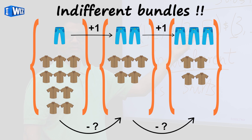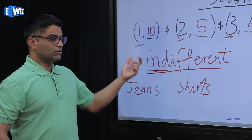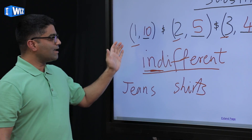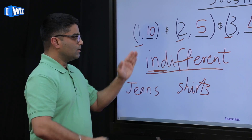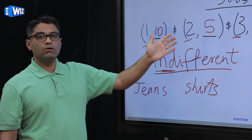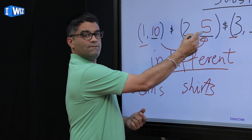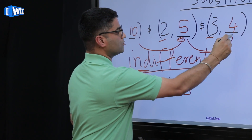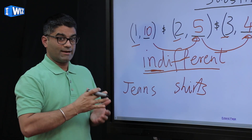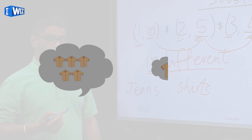Then to get another unit of jeans, the combination between jeans and shirts is not as wide as the first bundle. To get one more unit of jeans, I might only be willing to give up one shirt. So the idea behind bundles A, B, and C is that as you are indifferent between them, as you keep getting more and more of one good, the amount of the other good you're willing to give up — five from bundle A to B, and only one from B to C — becomes smaller and smaller.